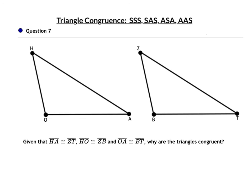My suggestion is to draw a picture. In question 7, we see that HA is congruent to ZT, HO is congruent to ZB, and OA is congruent to BT. Why are the triangles congruent? We have three sets of congruent sides — that's Side-Side-Side.